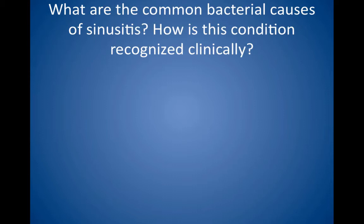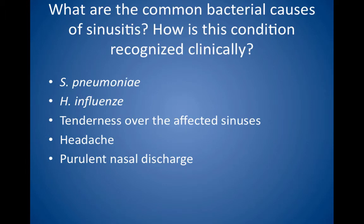What are the common bacterial causes of sinusitis? How is this condition recognized clinically? Sinusitis is often caused by Strep pneumoniae, Haemophilus influenzae, or other streptococcal or staphylococcal species. Look for tenderness over the affected sinuses, headache, and purulent nasal discharge, which can be yellow or green. Associated symptoms include headache and toothache in the case of maxillary sinusitis. Radiographs or CT scans are used to confirm the diagnosis and show opacification of the sinus, classically with an air-fluid level in acute sinusitis. CT scans are preferred to evaluate chronic sinusitis or suspected extension of infection outside the sinus.